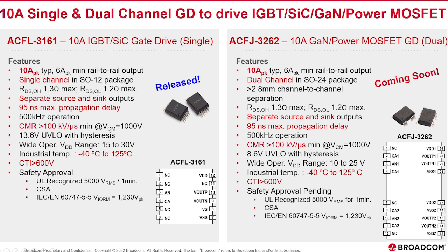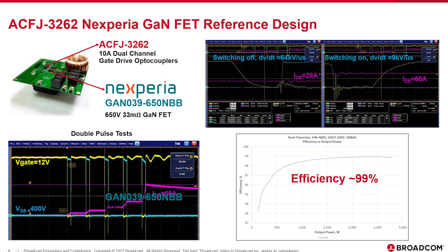The latest devices, including the ACFL-3161 and the upcoming dual device, use a new comparative tracking index of 600 volts, meaning these devices can be used in much higher voltage applications — this is a safety aspect for working voltage. Broadcom is also releasing a new reference design working with Nexperia: the ACFJ-3262 with a Nexperia 650-volt GaN device. As mentioned earlier, GaN devices have a sweet spot up to 650 volts and are typically used in those inverter applications.